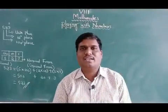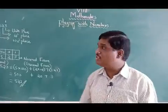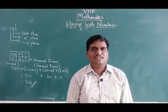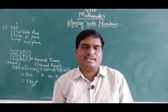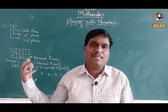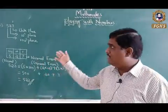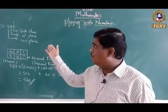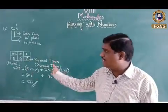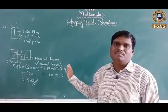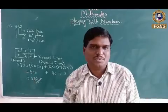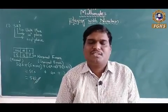So today you saw: the introduction to numbers, different symbols of numbers, the Roman number system, the use of numbers in our daily life, how the concept of counting started, and tally marks. At the end, I explained how the place value of numbers can be identified, and how a number can be converted from normal form to general form. In our next classes, we will study more and solve more problems. Keep watching our videos. Thank you.